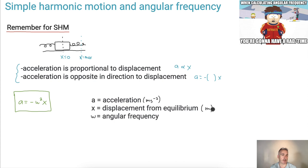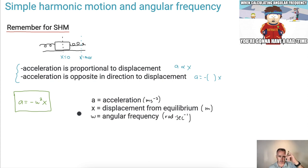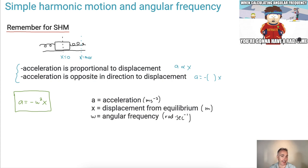Now what about angular frequency? Angular frequency is measured in radians per second — rad per second to the minus one. We're going to consider this thing called angular frequency, which relates to how an angle actually rotates. We'll see that more in other videos, but for now it's called omega.